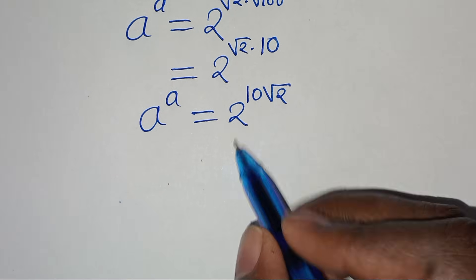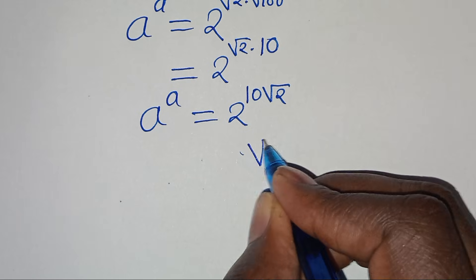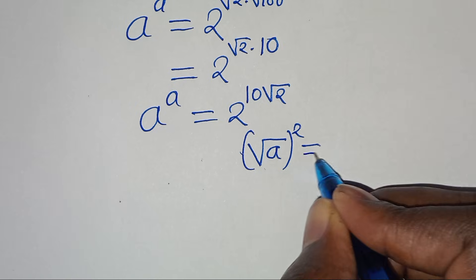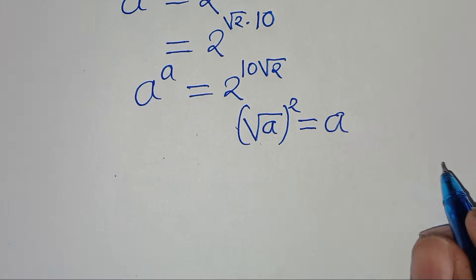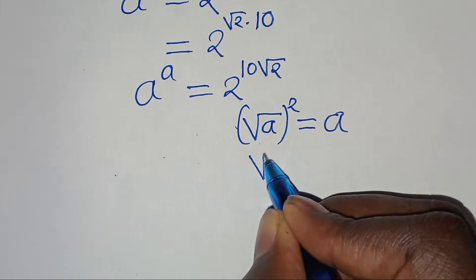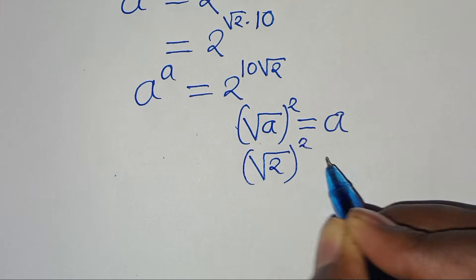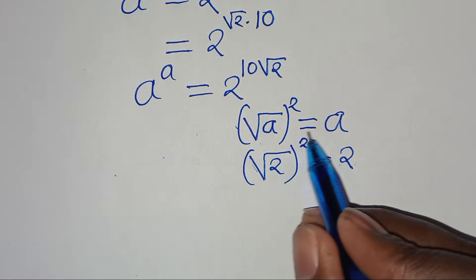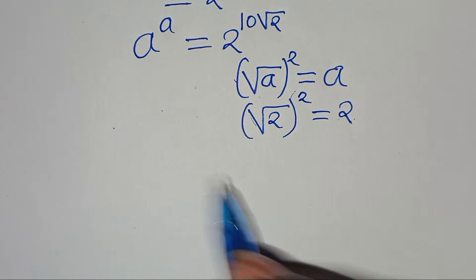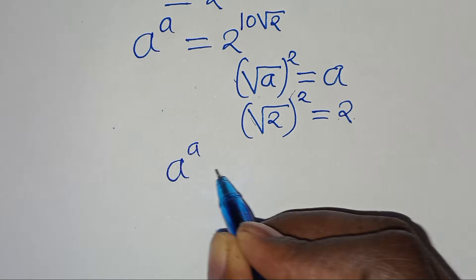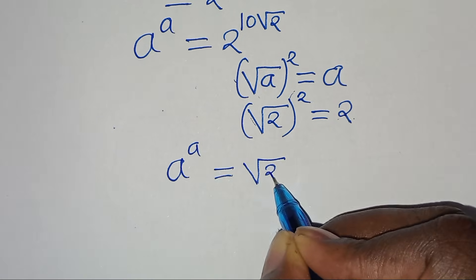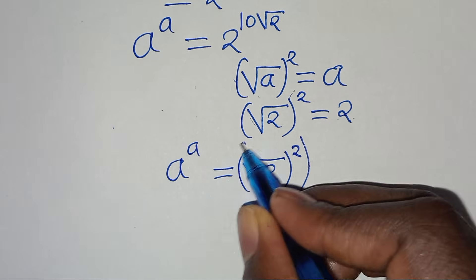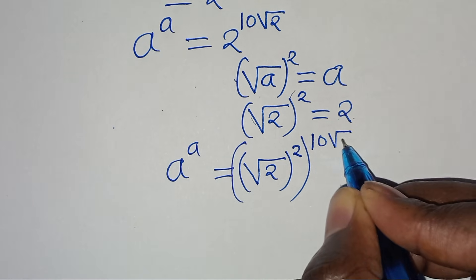The next step is that, given that the square root of a to the power of 2 is essentially the same thing as a, we can express 2 as square root of 2 to the power of 2. So we can substitute 2 with square root of 2 to the power of 2. This implies that we have a to the power of a equal to square root of 2 to the power of 2, raised to the power of 10 multiplied by square root of 2.